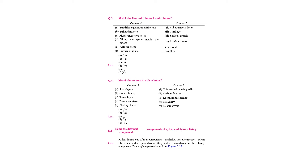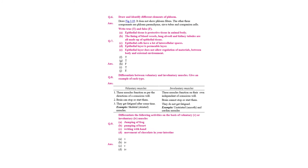The different components of xylem are: xylem tracheids, xylem vessels, xylem parenchyma, and xylem fibers — also known as wood fibers. You can go through the diagram already provided.